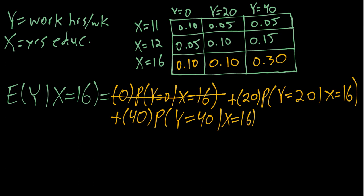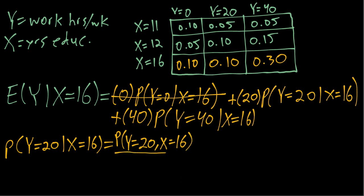So we can see now in order to compute this we need to know these two conditional probabilities. In order to compute those, we can use the conditional probability formula. First, probability that Y equals 20 given X equals 16. We take the joint probability divided by the marginal for the conditioning event.